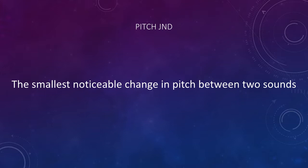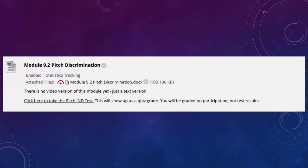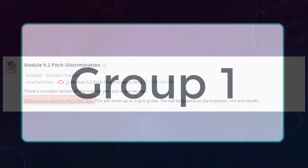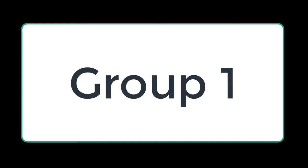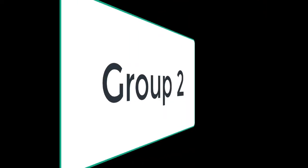First, let's test your ability to discriminate between two pitches. Go to Module 9.2 and click the link to take the Pitch JND test. On the video, you will hear 10 groups of 4 pairs of tones. You'll decide if the second tone in each pair is lower, the same, or higher in pitch than the first tone. The pairs are played quickly, so you'll have to make fast decisions.